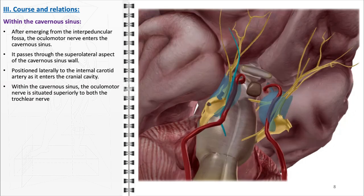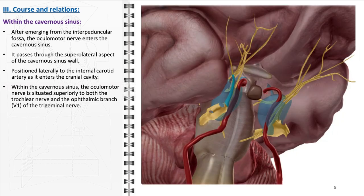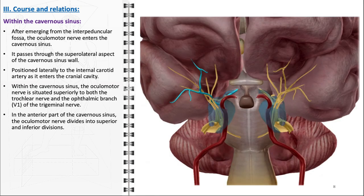Within the cavernous sinus, the oculomotor nerve is situated superiorly to both the trochlear nerve and the ophthalmic branch of the trigeminal nerve. The trochlear nerve is closely aligned with the oculomotor nerve; their proximity within the confined space of the cavernous sinus makes them susceptible to concurrent involvement in pathological conditions affecting the sinus. In the anterior part of the cavernous sinus, the oculomotor nerve undergoes an important division into superior and inferior branches. The superior division primarily innervates the superior rectus and levator palpabri superioris muscles, while the inferior division innervates the medial rectus, inferior rectus, and inferior oblique muscles. This division also includes parasympathetic fibers that control pupil constriction and lens accommodation.